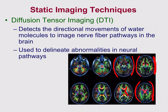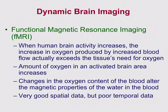Static imaging techniques like CT and MRI just give you a picture of the brain — nothing is behaviorally happening. If you want dynamic brain imaging — what's going on in the brain as you're doing something — you need functional MRI, or fMRI.